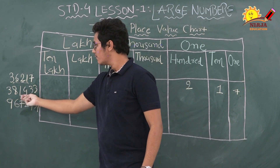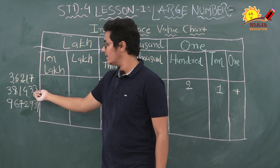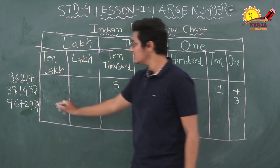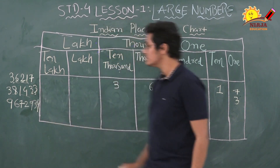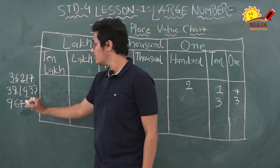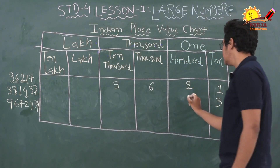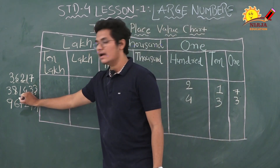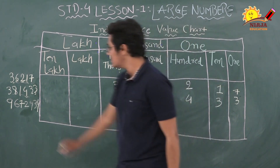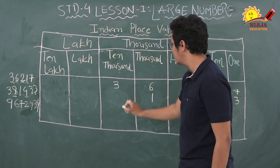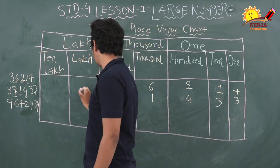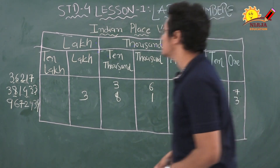Now the next number: starting from the right side, the ones digit is three, the tens digit is also three, the hundreds digit is four, the thousands digit is one, the ten-thousands digit is eight, and the lakhs digit is three. So this number is written as 3,81,433.